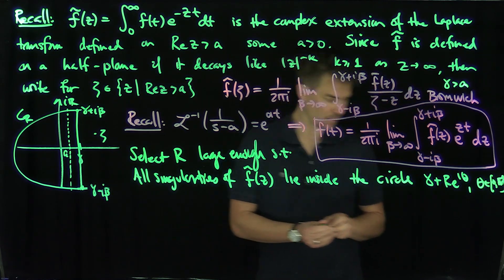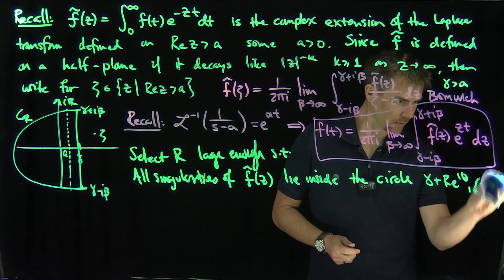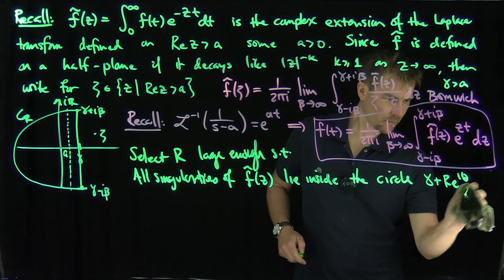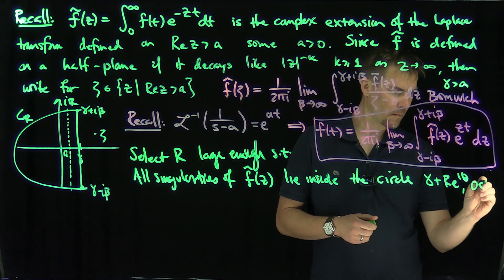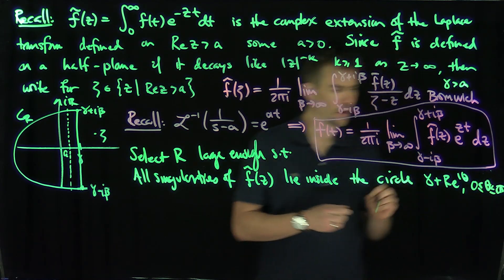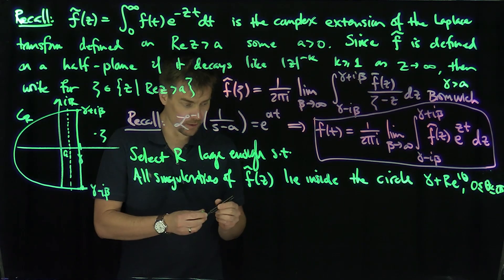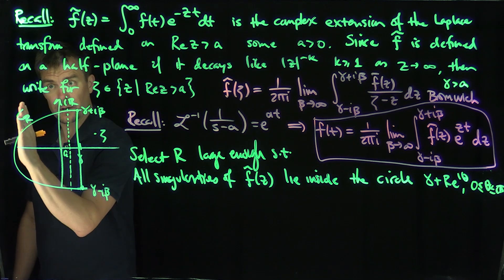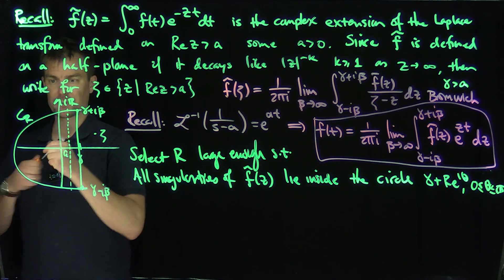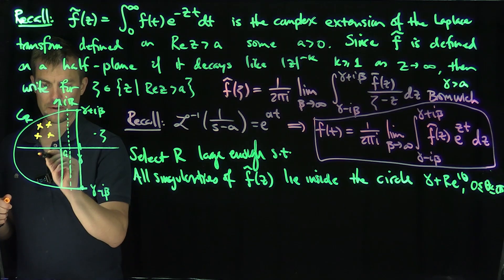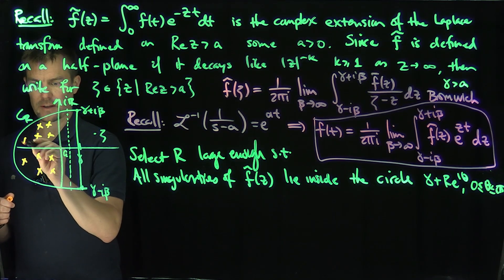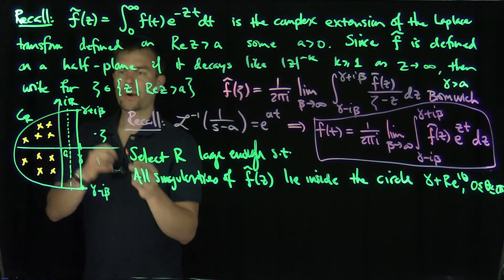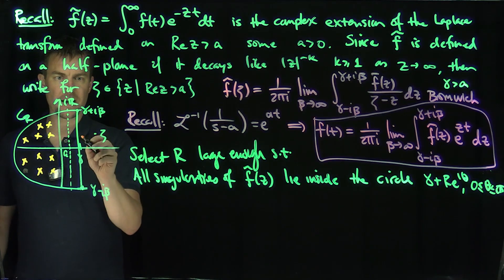All the singularities of the Laplace transform — remember it's holomorphic to the right of a — must lie in the left half-plane. There are some singularities over here; you can actually show they're symmetric if they're poles. So all singularities are in this disc. Then by the residue theorem, integrating over the vertical line L and the semicircle C_R gives a closed curve, and as R goes to infinity we capture all of them.